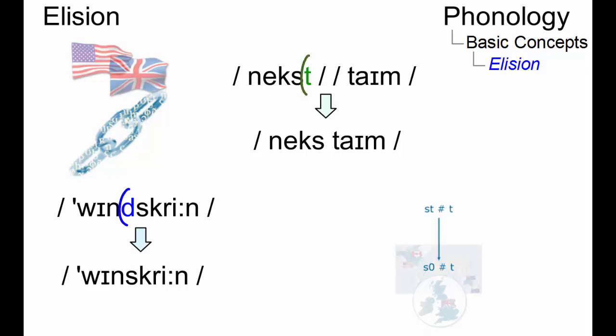Elision is the phonological process in which a phoneme that is present in the citation form of a word is deleted under the influence of the context.